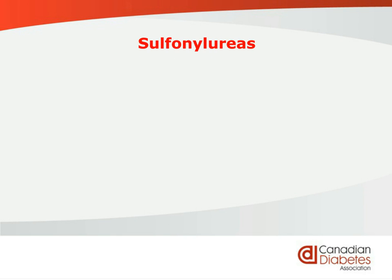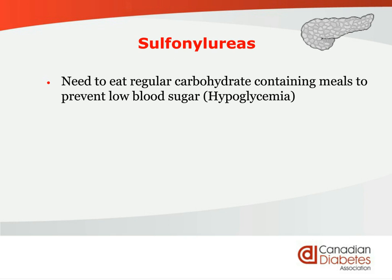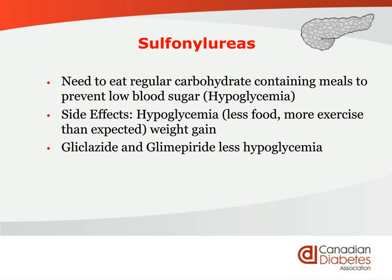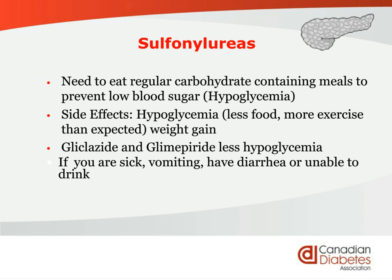With the sulfonylurea medications, you must regularly eat carbohydrate-containing food — grains, fruits, and vegetables — at regular intervals so you don't have a low blood sugar. If you eat only protein and avoid all carbohydrates, you are at risk of hypoglycemia. The primary side effects are low blood sugar and weight gain. Less food than normal or more exercise than normal can cause a low. Gliclazide or Diamicron and glimepiride cause less hypoglycemia than glyburide because they're more sensitive to blood sugar levels. These medications should also be stopped if you are sick, vomiting, have diarrhea, or are at risk of dehydration.